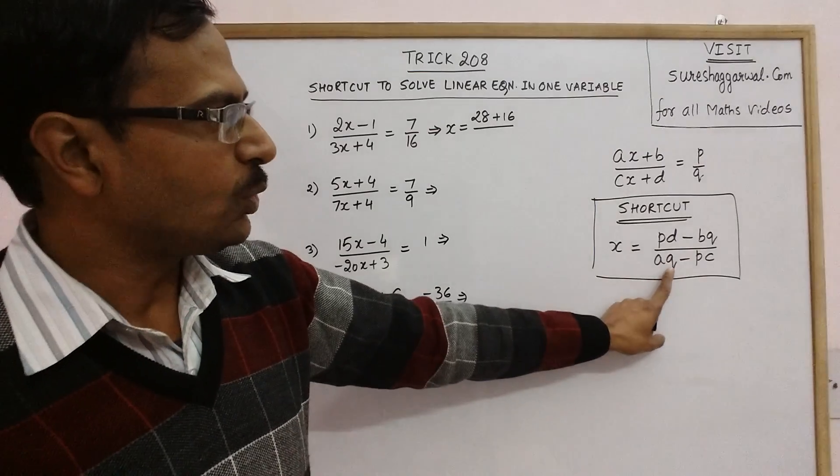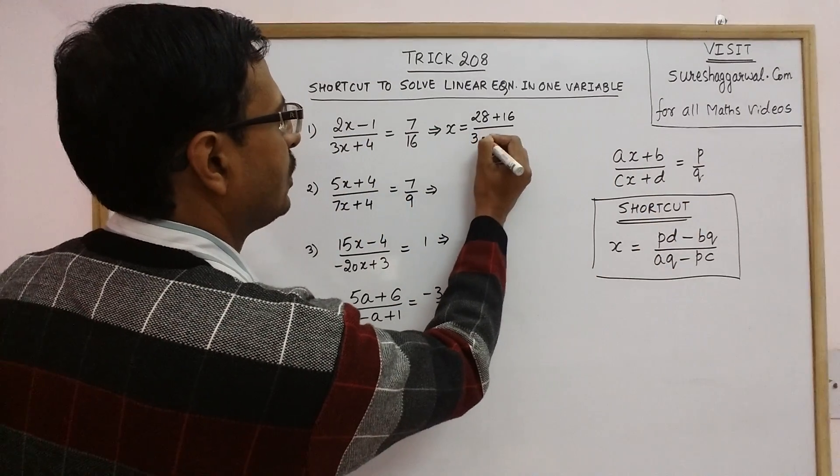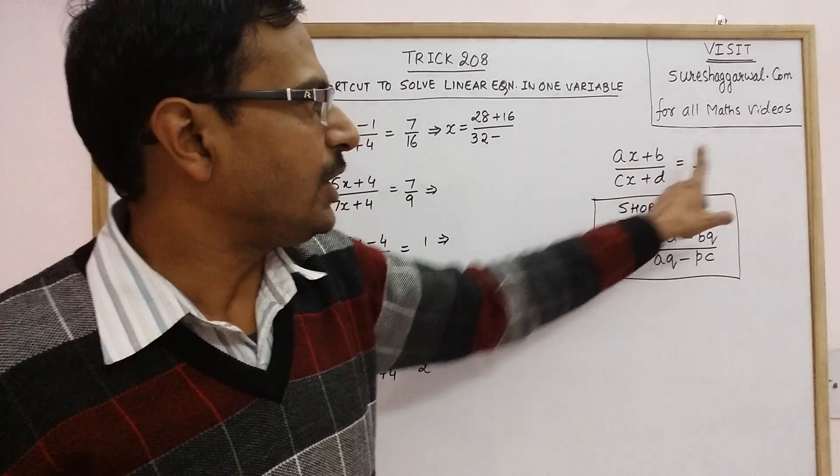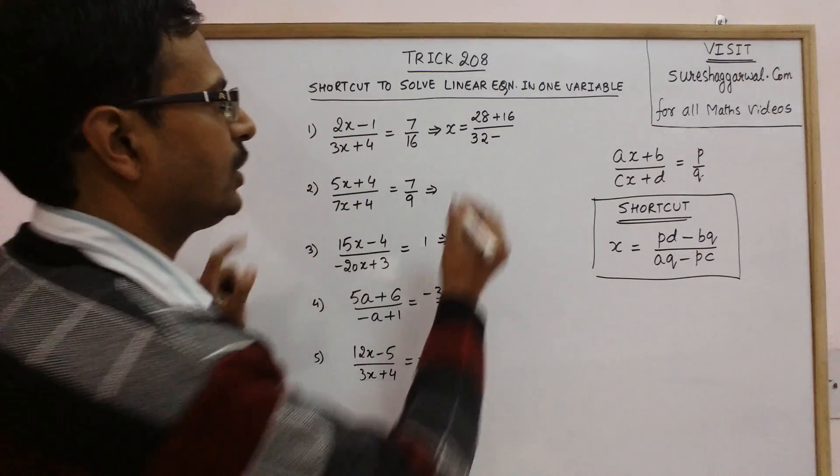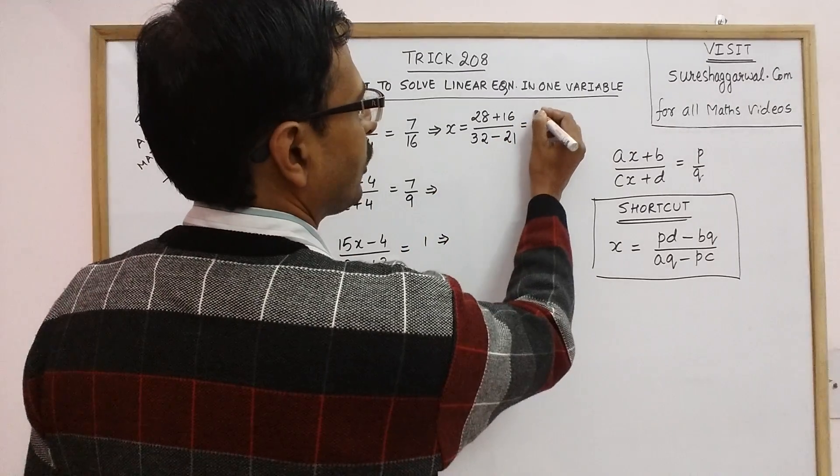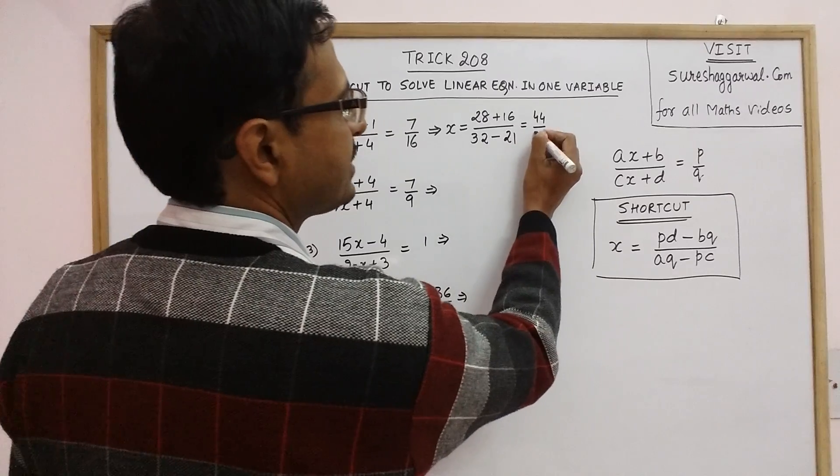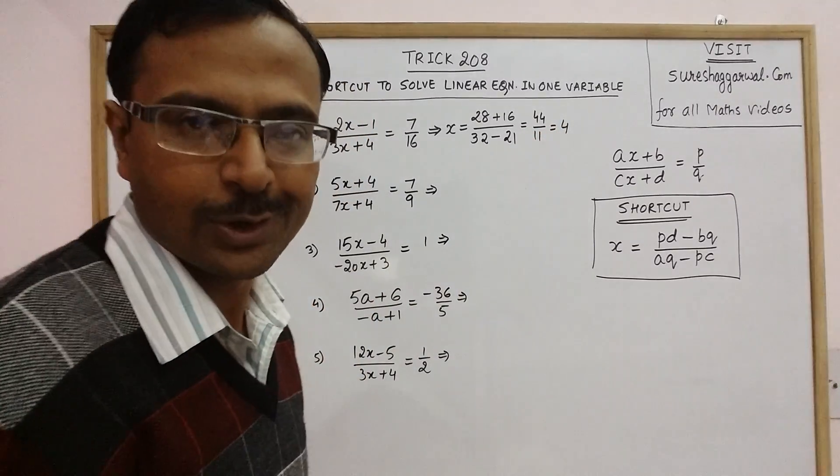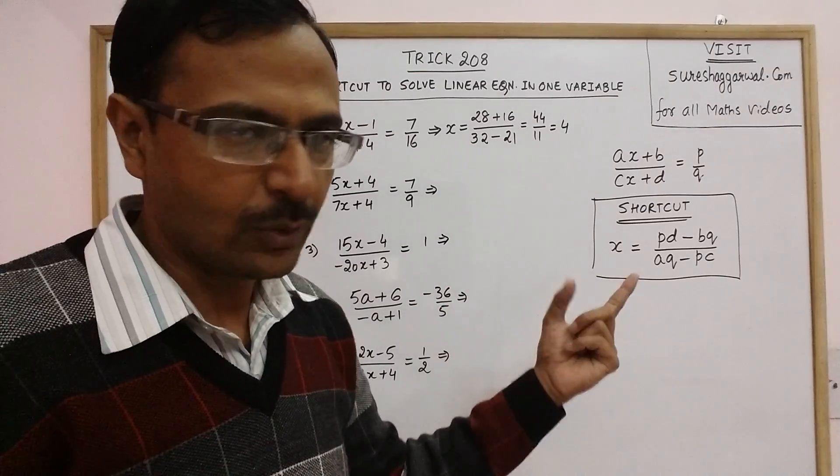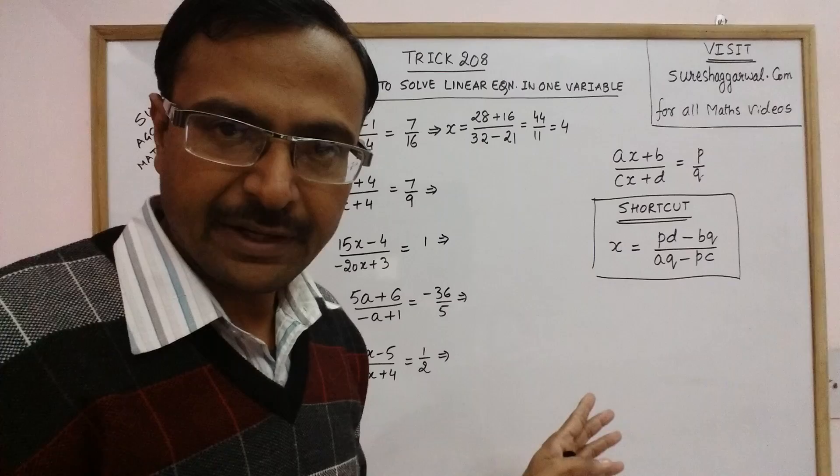Upon we have aq, so a into q, 2 into 16, this is 32 minus pc. p into c, 7 into 3 is 21. So in the next step you get the answer. So this is 44 upon 32 minus 21 is 11. So your answer is 4. So you see only a single step and you get your final answer without cross multiplication without combining the like terms.